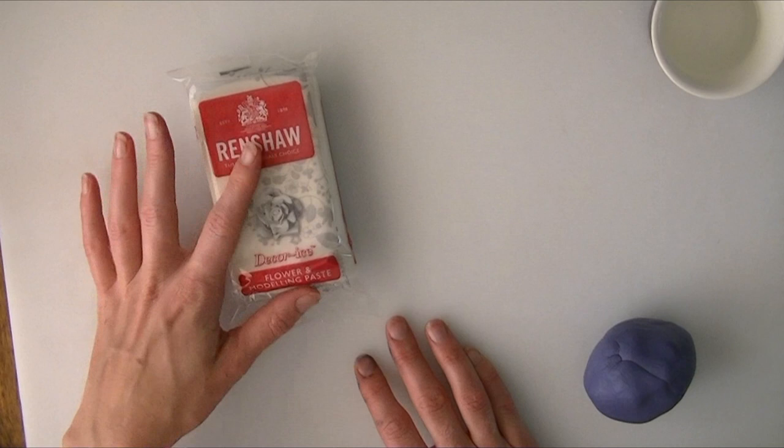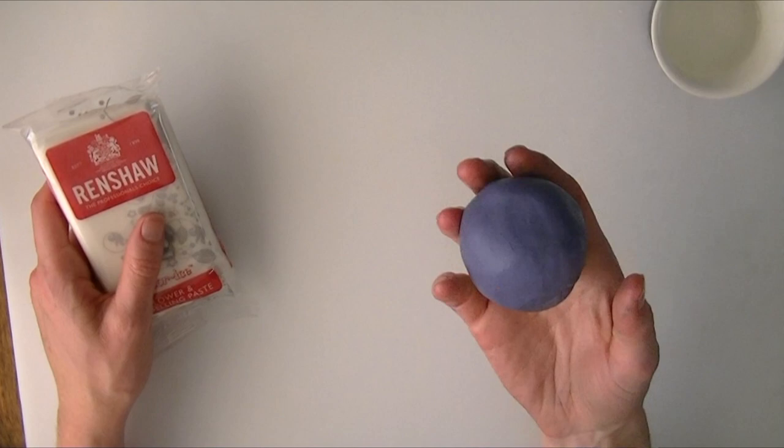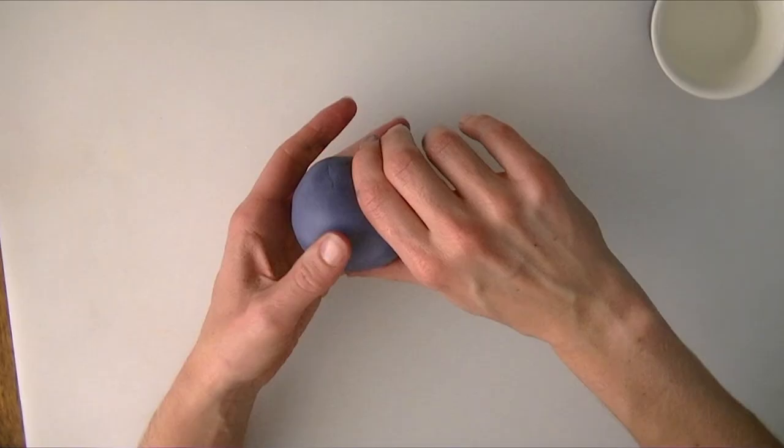Hi guys, in this video we are going to make a purple minion. I'm just going to use some flower and modelling paste. I have started with the white one, I've got the Renshaw one here and I have just dyed some a purple color.